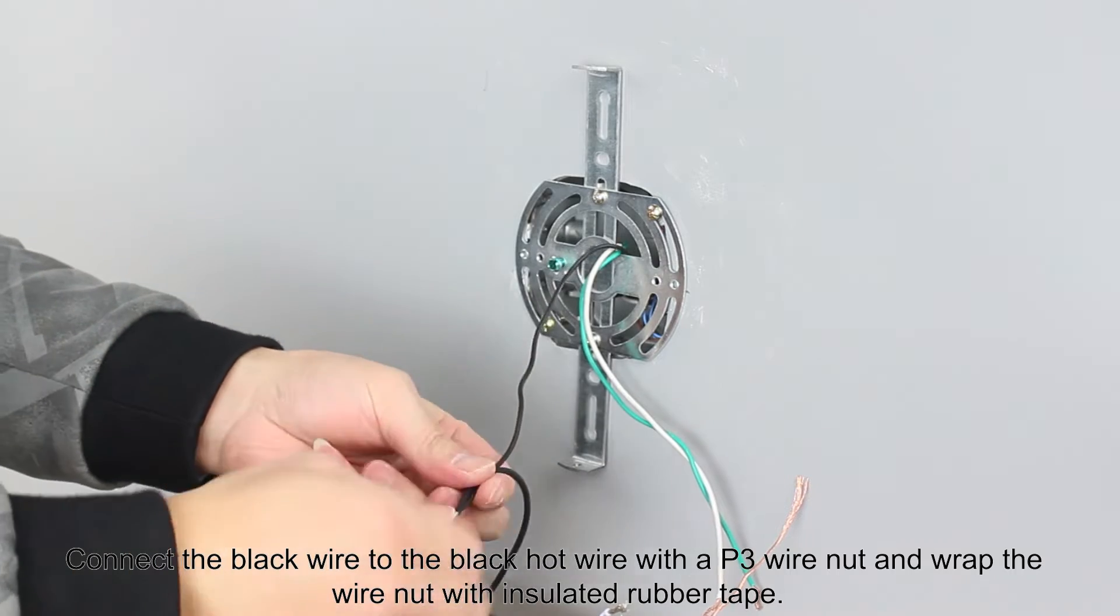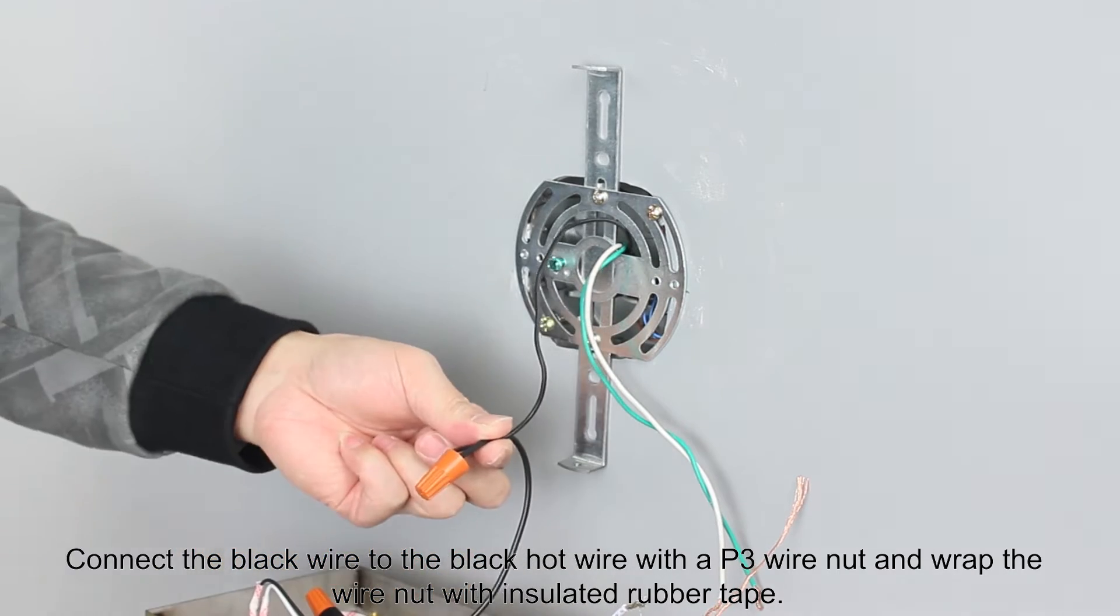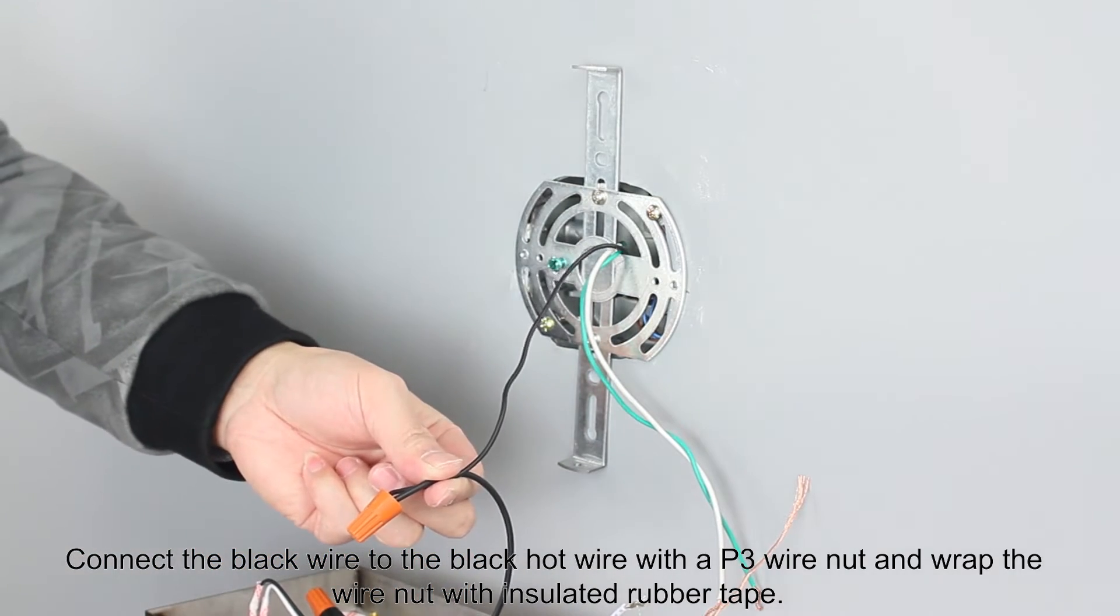Connect the black wire to the black hot wire with a P3 wire nut and wrap the wire nut with insulated rubber tape.